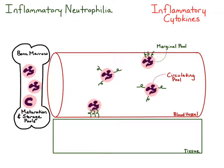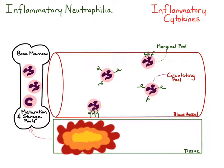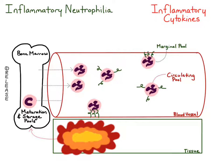To explain this inflammation, I'm going to draw some tissue represented by the green box and a site of inflammation within the tissue. This inflammation releases inflammatory cytokines, which signal back to the bone marrow, telling it to release the storage pool of mature neutrophils. If the inflammation is strong enough, it also tells the bone marrow to release neutrophil precursors, including band neutrophils.